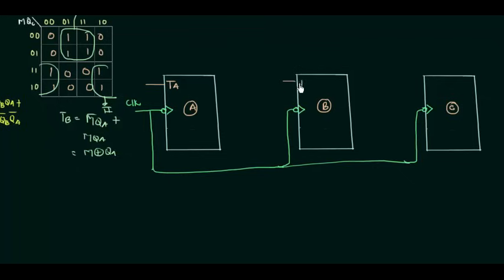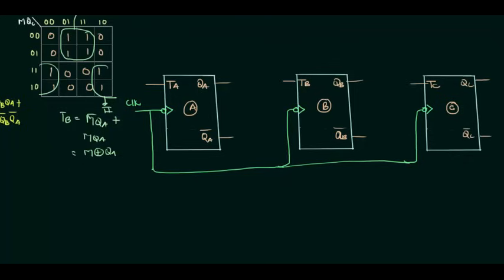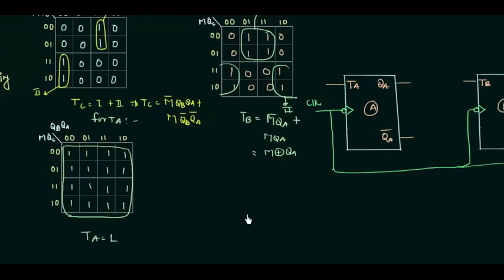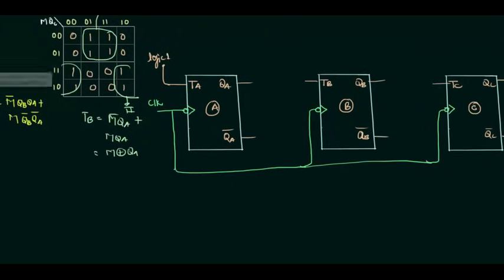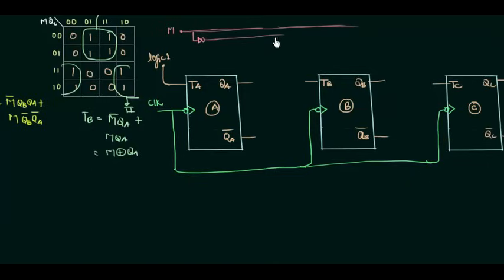The inputs are TA, TB, and TC, and the outputs are QA, QB, and QC. We also need QA complement, QB complement, and QC complement for our logic. Since TA equals 1, we give logic 1 directly to TA. The control input is M, and we use a NOT gate to generate M complement, since M complement appears in our expressions.